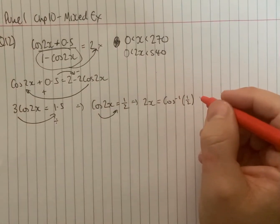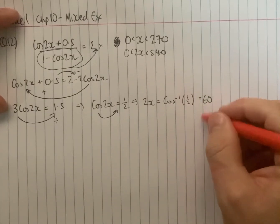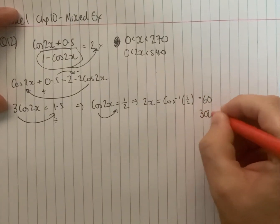And you should know that cos inverse 1 half is 60 degrees. So we're going to have 60 degrees. To work out the second angle we'll take away from 360, so 300 is also going to work.